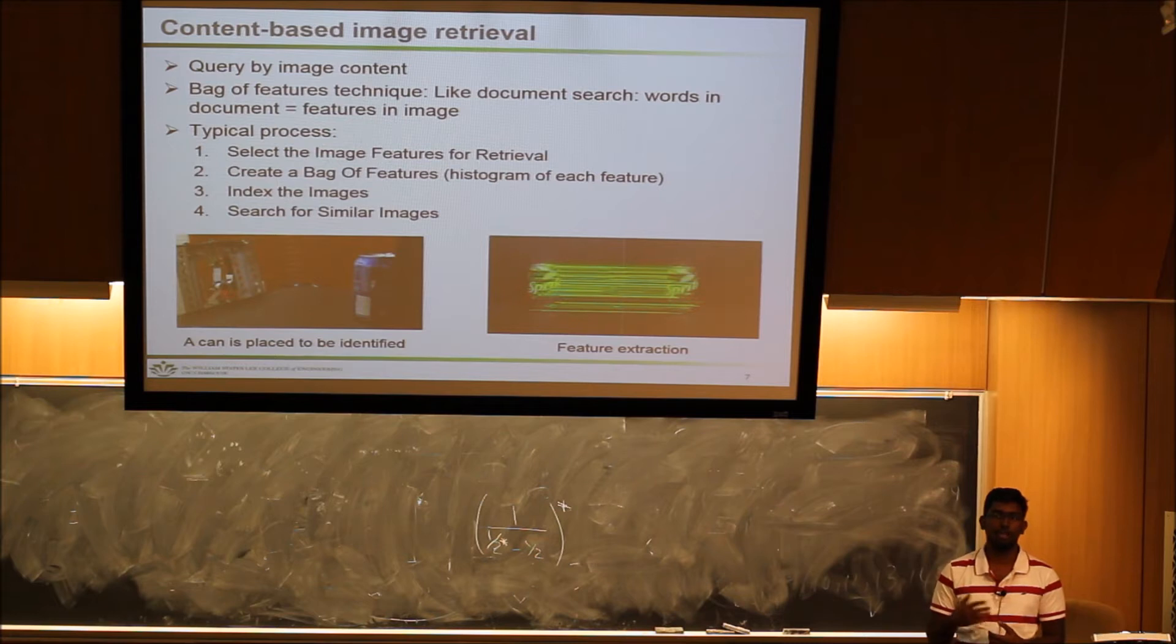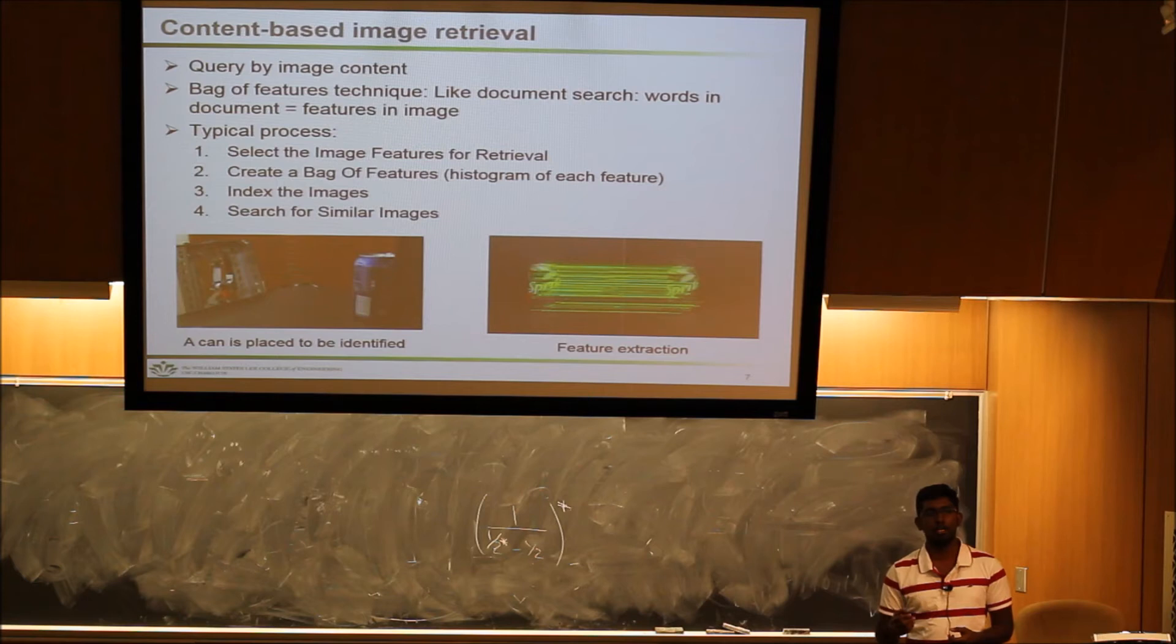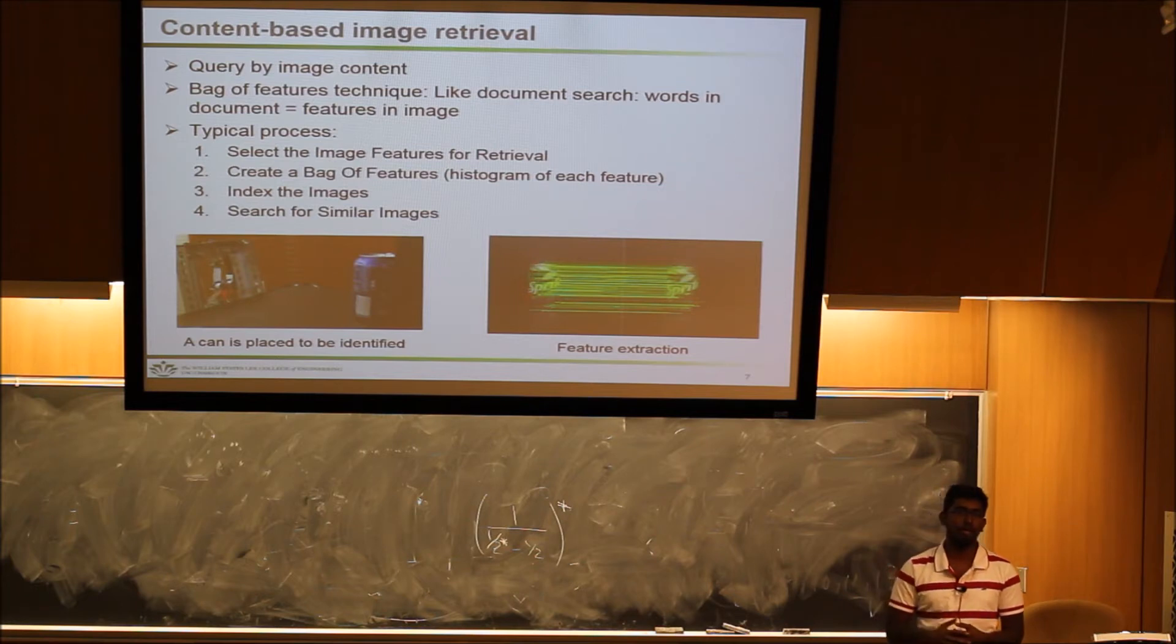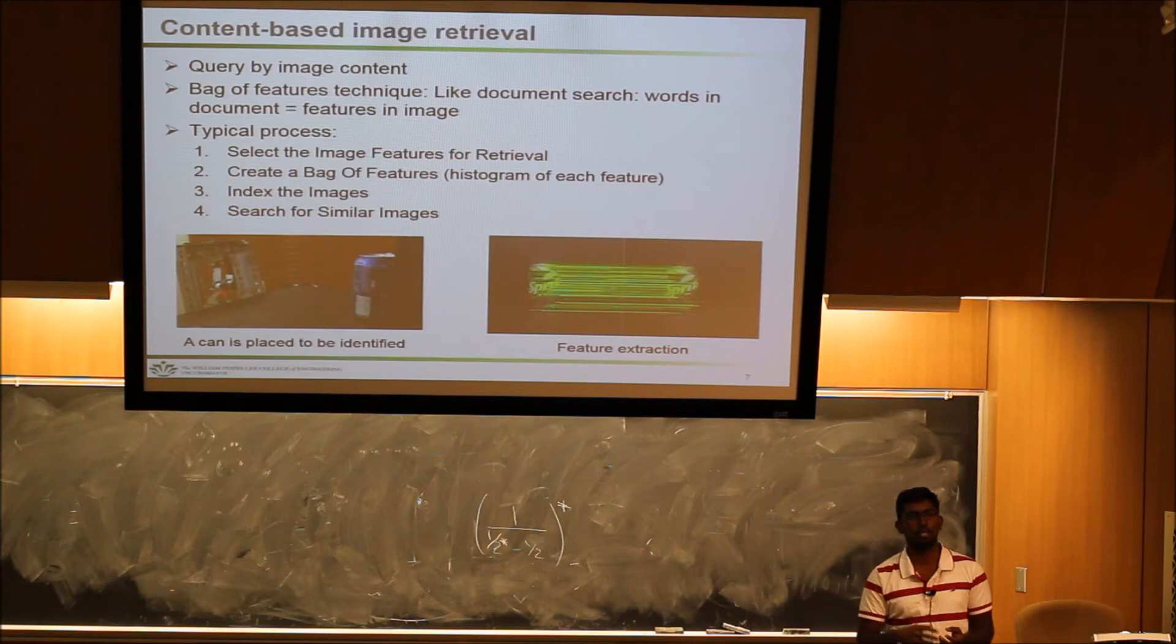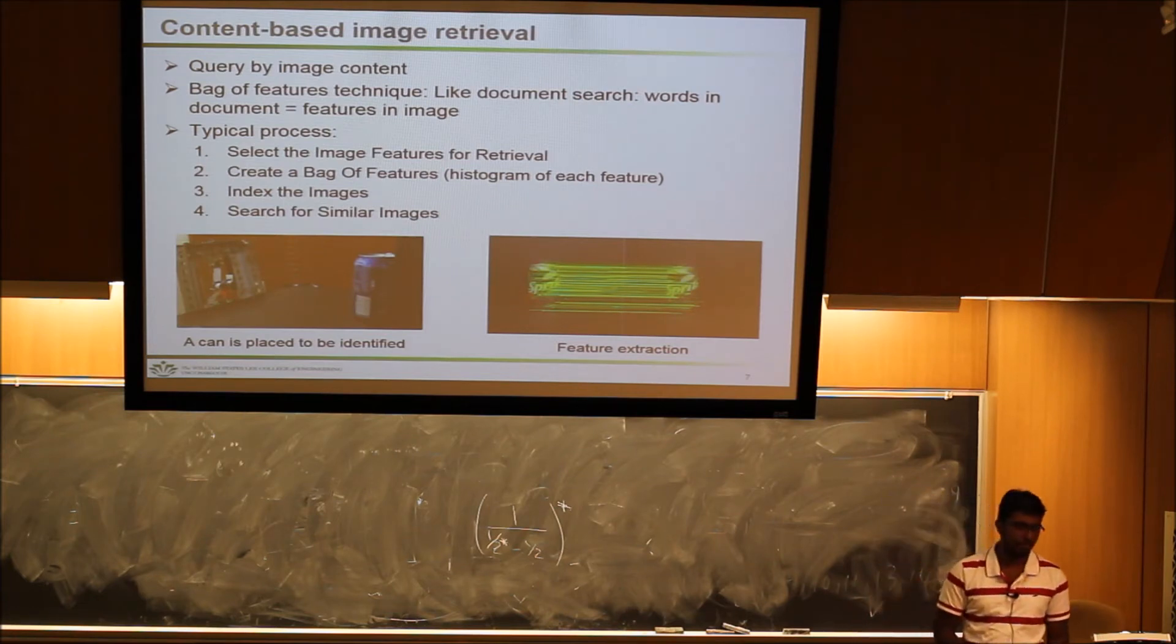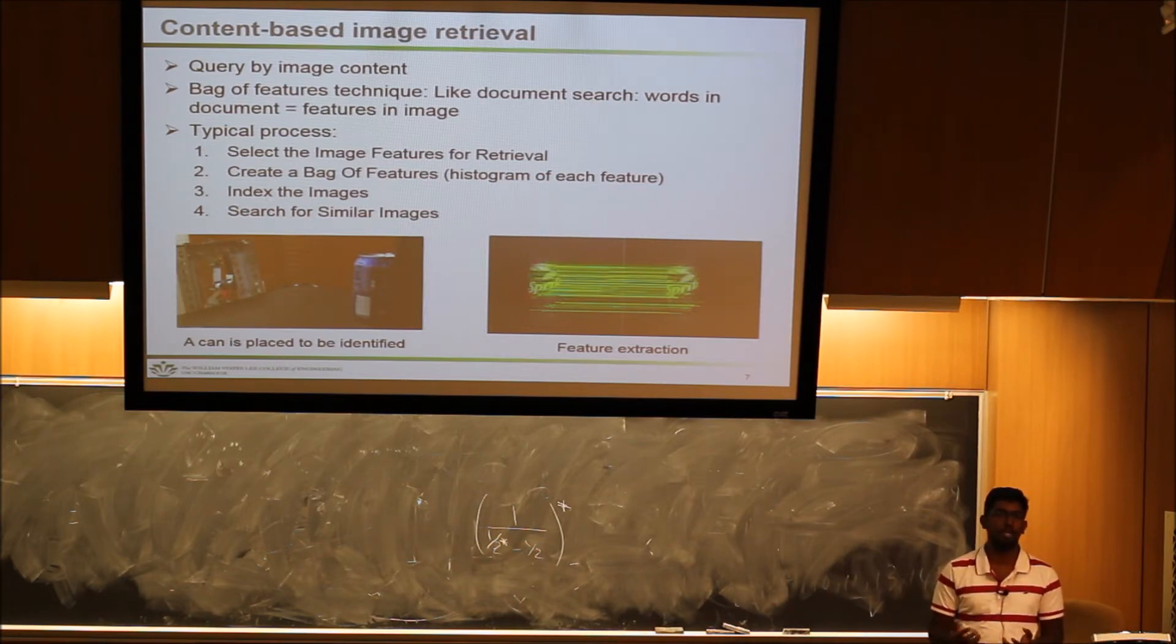Using the toolbox, we extract the features of these images. Think of it like searching for words in a document, where the words are actually the features. It creates a database of these features. When it gets an image it wants to analyze, it extracts these features and compares them within its database to find a match. Once the image processing is done, the result is either it's recyclable or not, which is what it sends back to the actuator control.